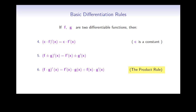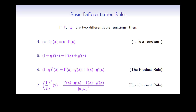And finally, the derivative of f divided by g at x is equal to f prime of x times g of x, minus f times g prime of x, divided by g of x squared. This is the quotient rule.